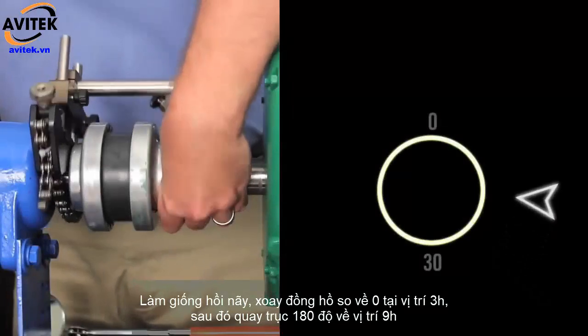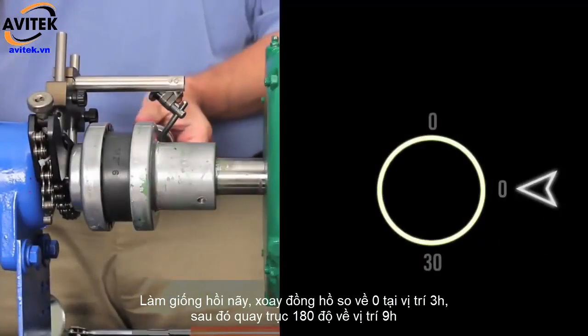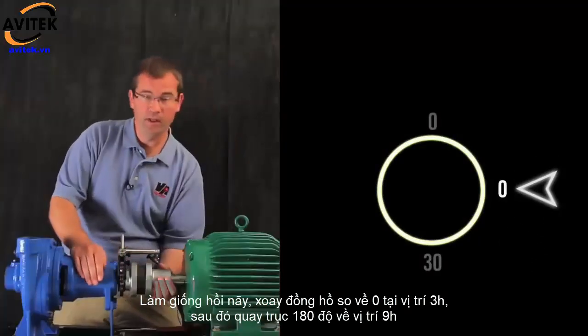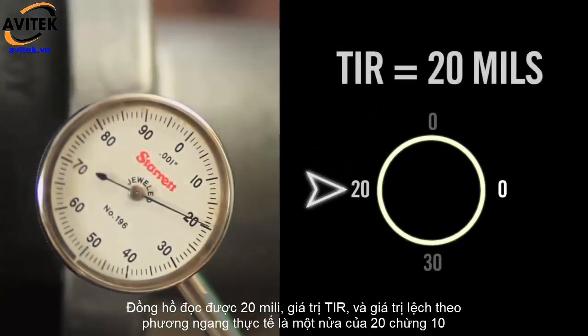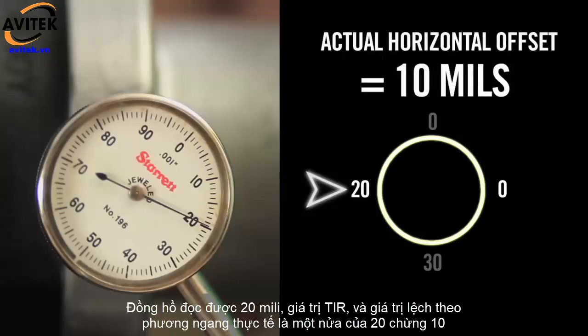The same is true if I zero the dial indicator at 3 o'clock, and then roll 180 degrees to 9 o'clock. It reads 20 mils, the TIR, but the actual horizontal offset is half of 20, or 10.